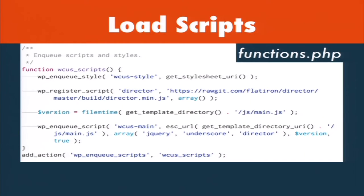In my functions.php file, all I have is enqueueing my scripts and styles: enqueuing my CSS style, registering the Director script because it's not bundled as part of WordPress, and my main JS file for the theme — enqueuing that and declaring the dependency of jQuery, Underscore, and the Director script I registered just before. That's all that's in my functions.php file.